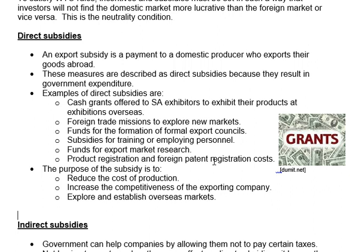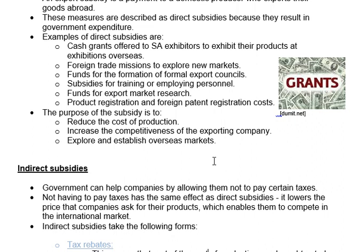The purpose of a direct subsidy is to reduce production costs. The export subsidy lowers production costs, so selling prices decrease, making businesses more competitive — competitiveness means lower prices and good quality. And lastly, it helps to explore and establish overseas markets, which is what many of those direct subsidy examples were about.